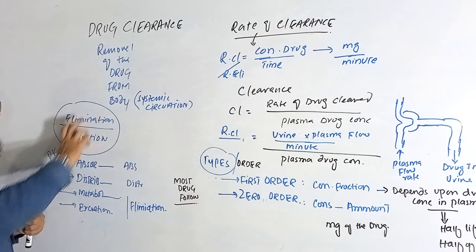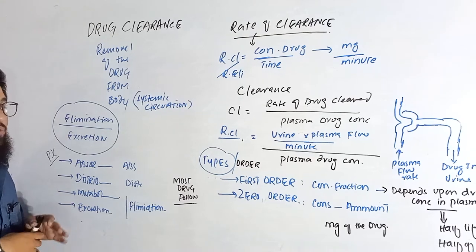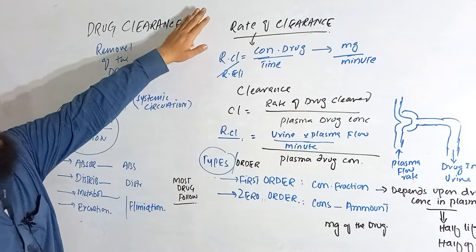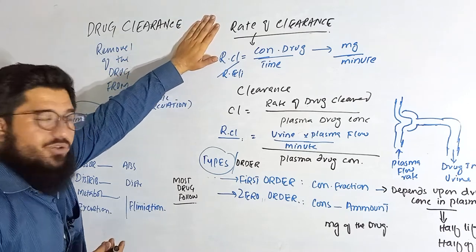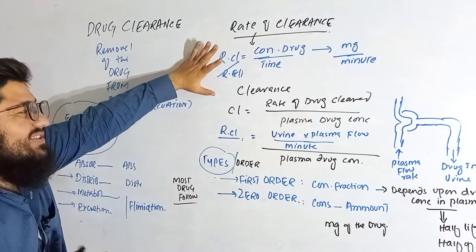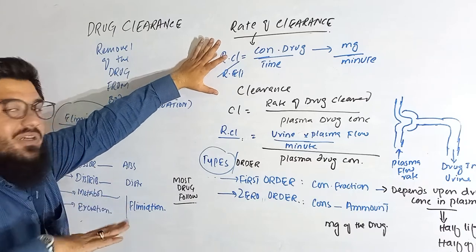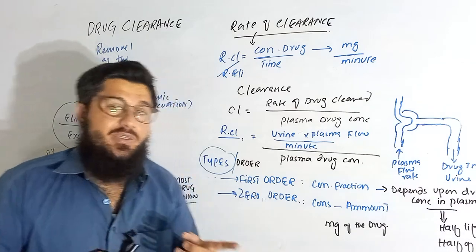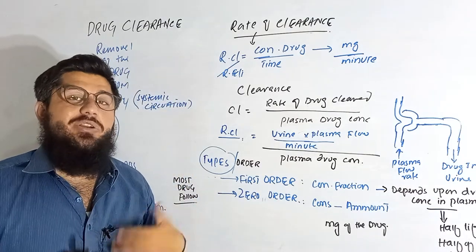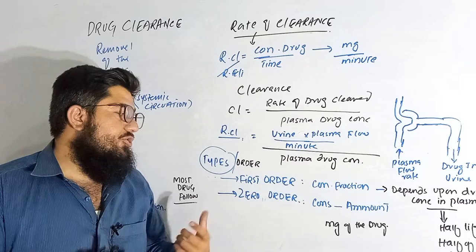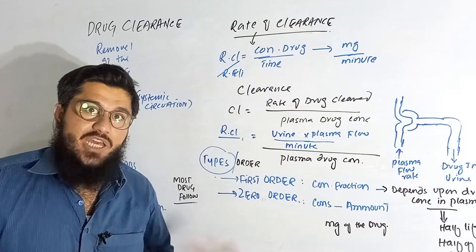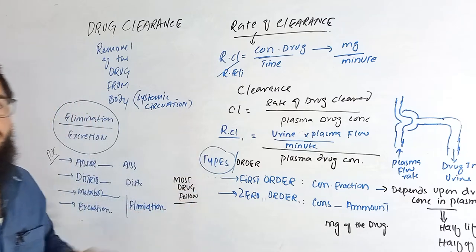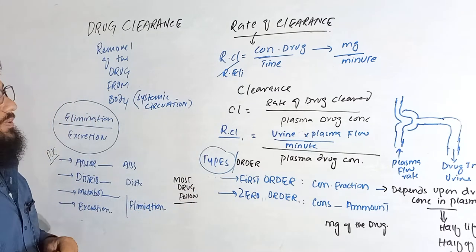We'll clear the concept of elimination and excretion, then talk about rate of clearance and rate of elimination. After that, we'll cover simple clearance and renal clearance, and then discuss first order and zero order reactions and elimination types.